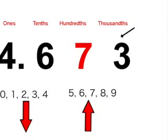If the number is 0, 1, 2, 3, or 4, we round down. If it is 5, 6, 7, 8, or 9, we round up. Our number is 3, so we round down.